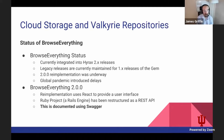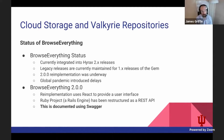Regarding the current status of Browse Everything, it was going to be integrated into FIGGY for our usage at the Princeton University Library. Currently it's integrated into Hyrax 2.x releases — stable for file system-based uploads and working in at least some cases with cloud storage services. There is a 2.0 re-implementation underway. The global pandemic introduced significant delays, and I was heavily involved in efforts to re-implement it along with other community members, most notably Northwestern University, Indiana University, and the University of Cincinnati.